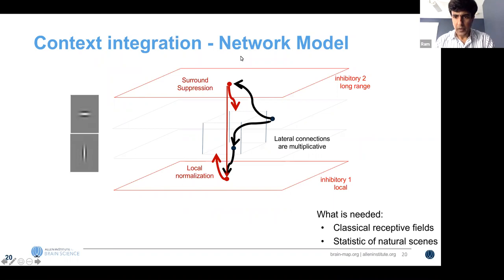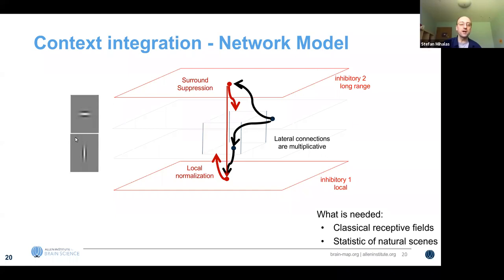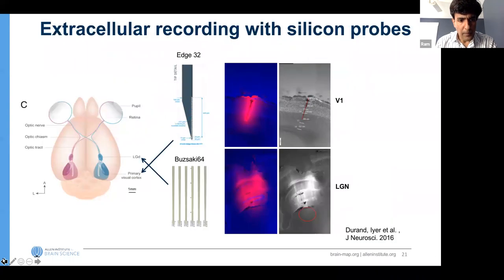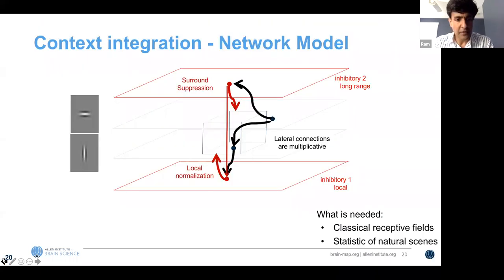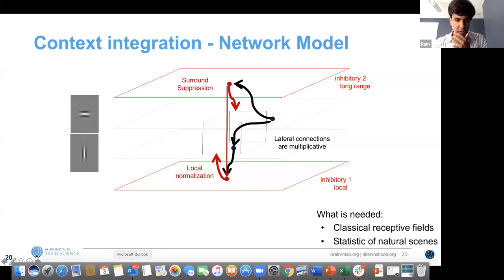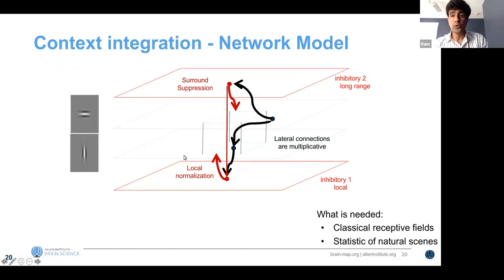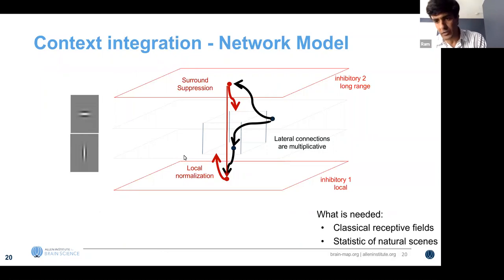Thanks Stefan. So Stefan has set it up nicely for me to describe how we took this theoretical formalism or network model and used in vivo experimental data from mouse visual cortex to compare how well the predictions from our model match experimental observations — in terms of specificity of connections and distance dependence of connections.